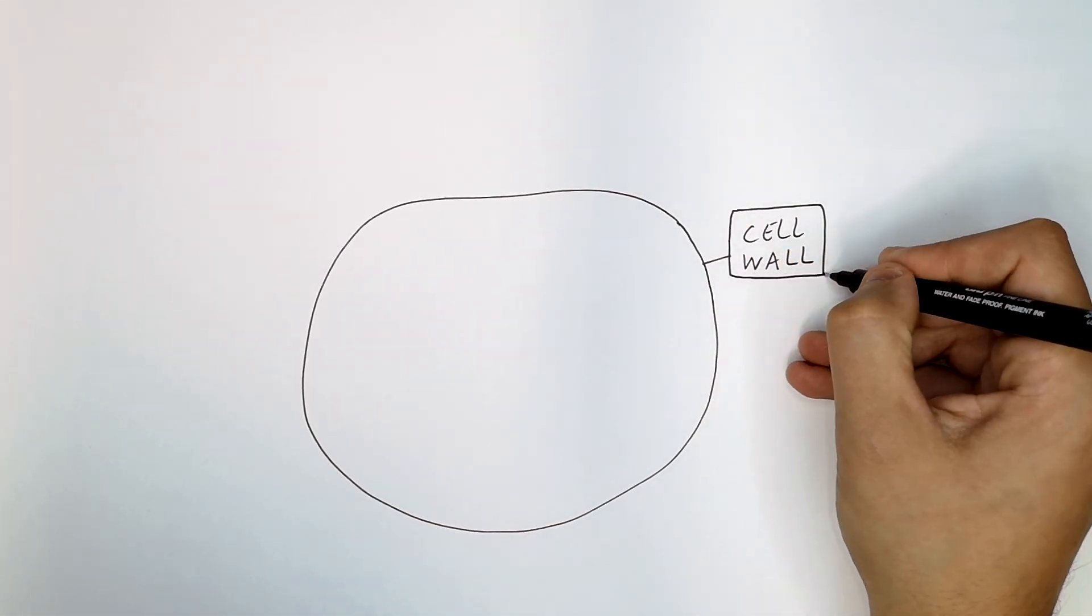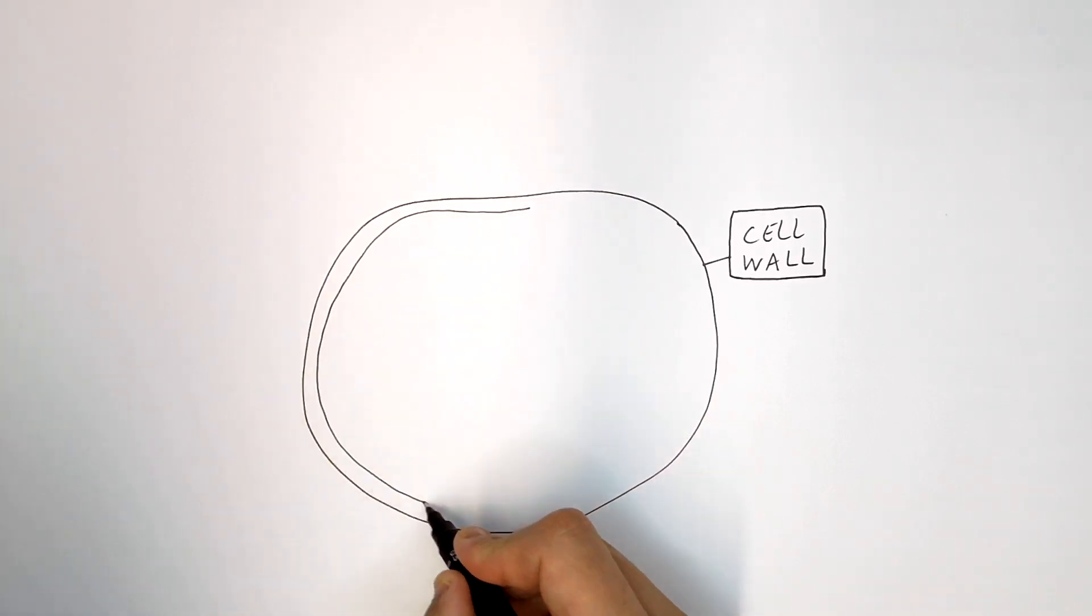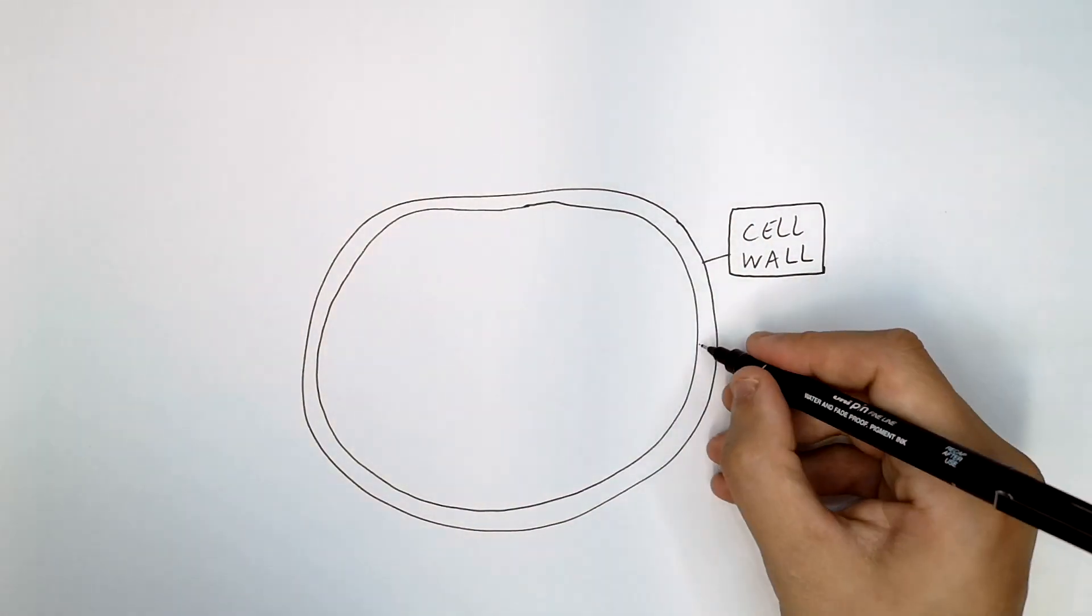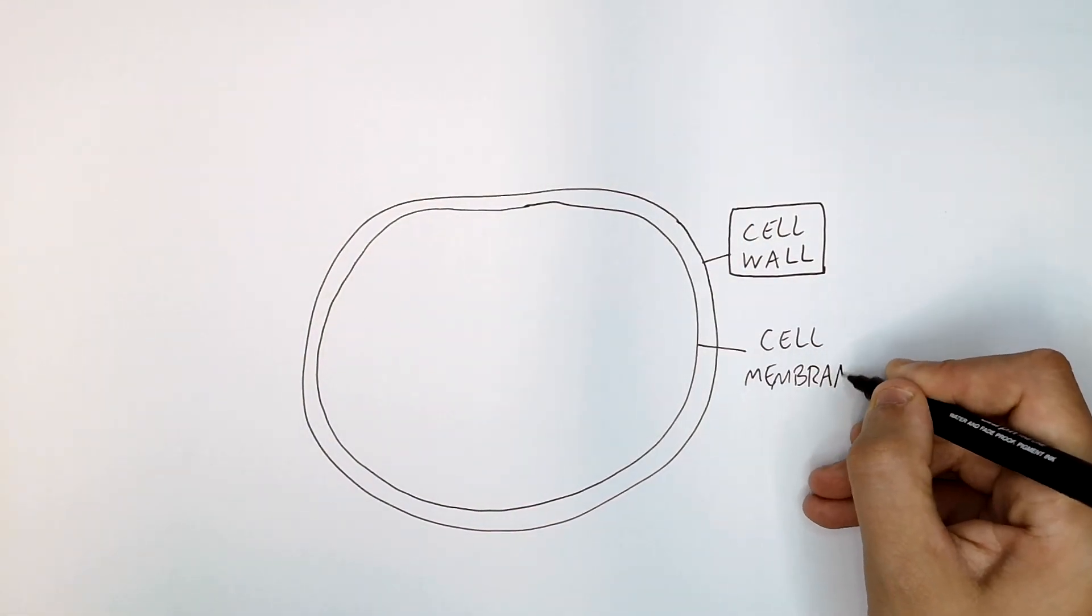The cell wall strengthens and protects the bacterial cell. It's got a cell membrane. The cell membrane controls what goes in and out.